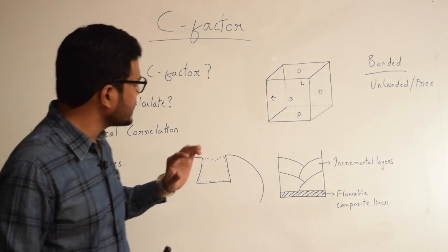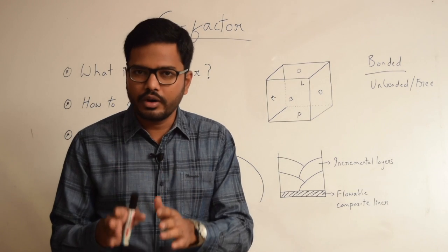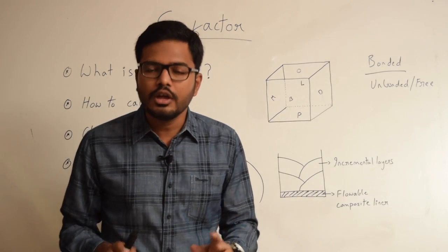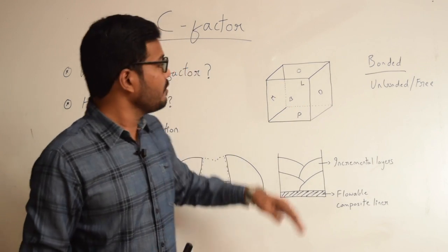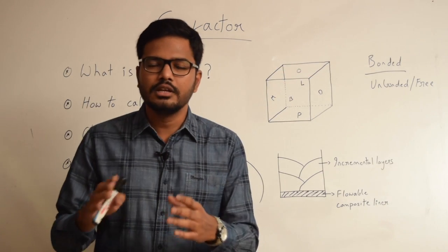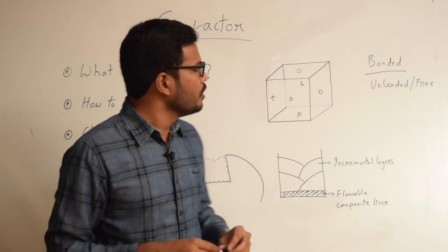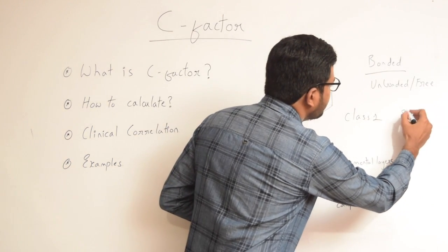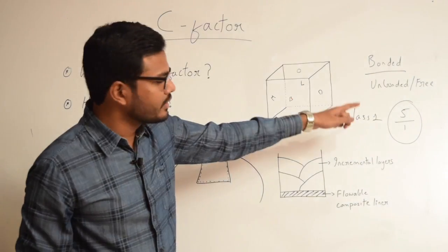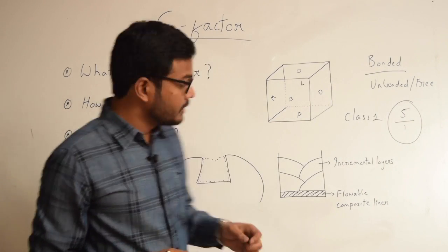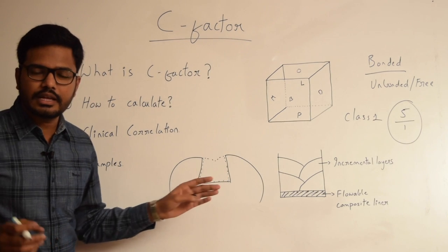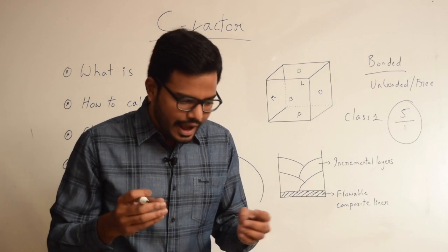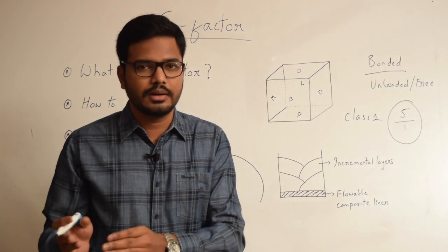For example, in case of a class 1 cavity, as you all know, we have five bonded surfaces — buccal, lingual, mesial, distal, as well as the pulpal floor — which are bonded to the restorative material such as composite. And we have one unbonded or free surface, which is the occlusal surface. So in a class 1 cavity, we have five bonded and one unbonded surface. The C-factor in case of a class 1 cavity is 5, meaning there are greater number of bonded surfaces, resulting in more chances for stress generation and potential bond disruption.